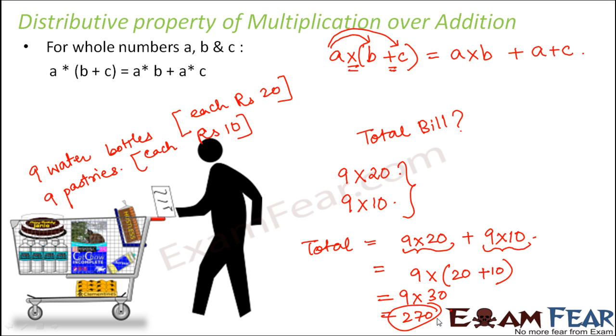Now this distributive property basically makes calculations easier. That is in fact the use of all of these properties. Whether you talk about associative or commutative or distributive their purpose is to make calculations easier. When you have bigger calculations with complicated whole numbers your calculations will become easier.